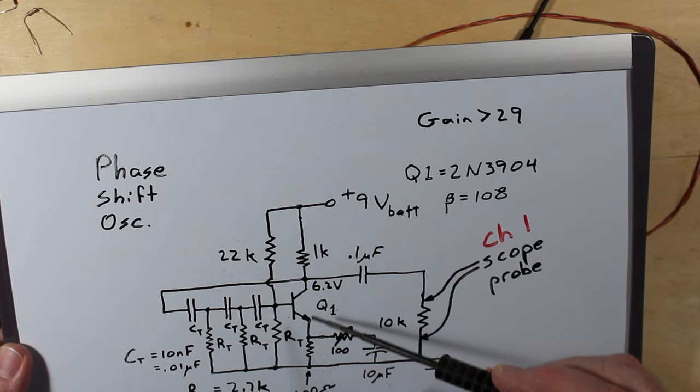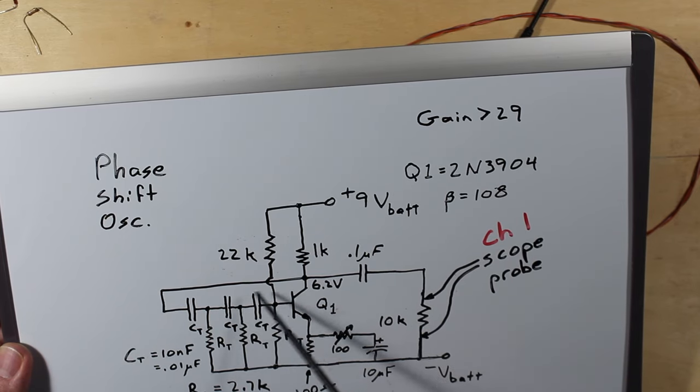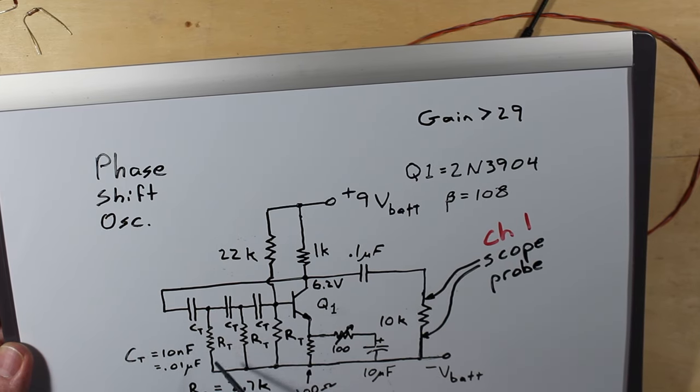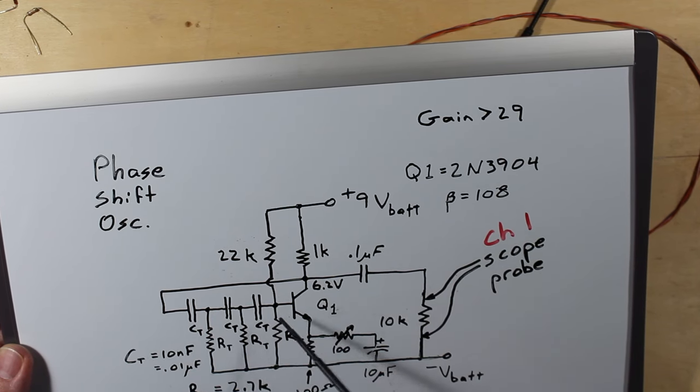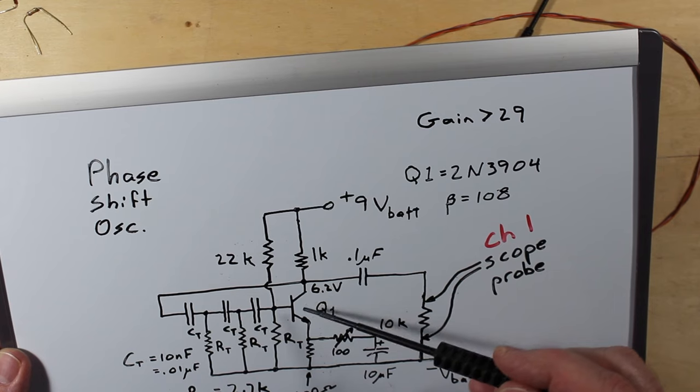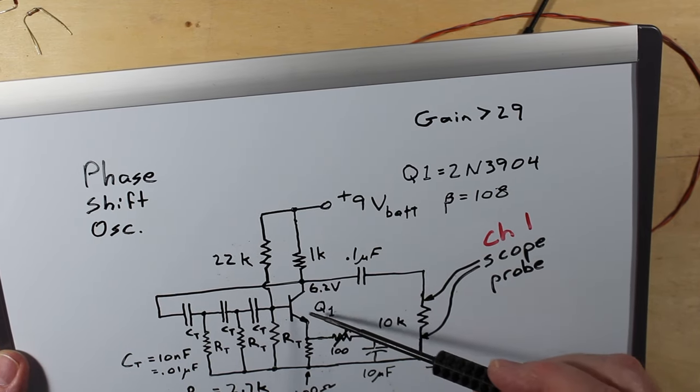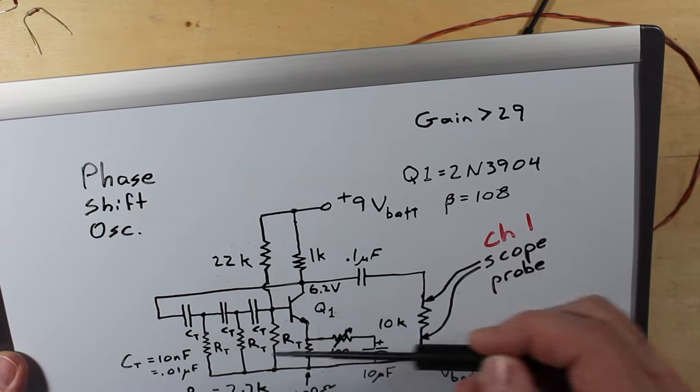So this circuit here, the gain portion of our circuit, needs to overcome all the losses through these capacitors and resistors here before they get back to the base again. So it needs a gain of about 29 to get back into the positive territory to keep this thing going again and again.